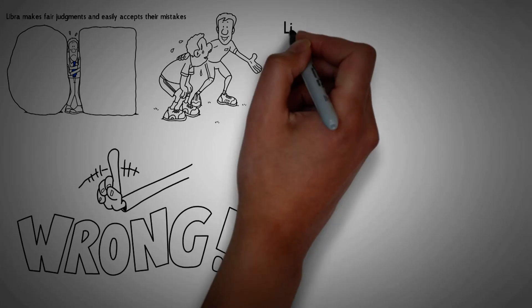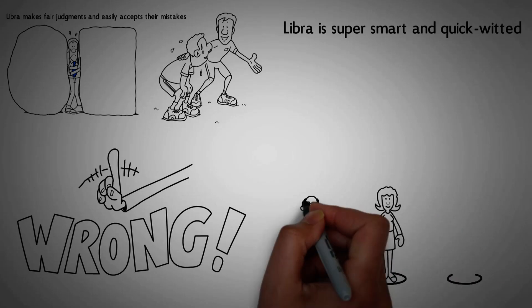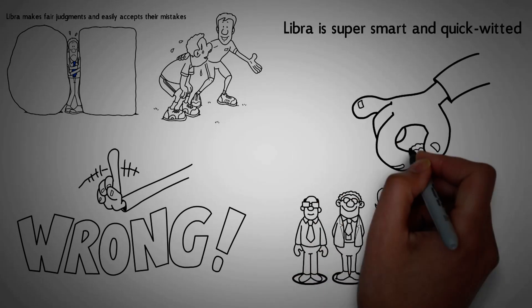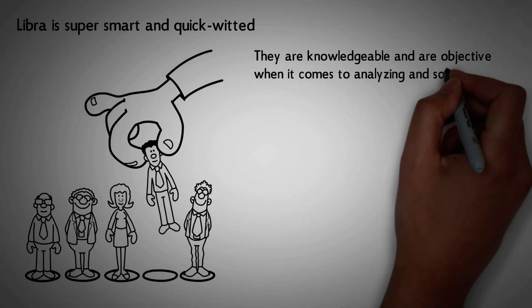Number 4. Libra is super smart and quick-witted. Libra sign has some of the most intelligent and sharp individuals. They are knowledgeable and are objective when it comes to analyzing and solving issues.